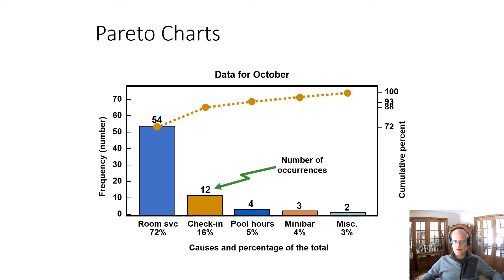The individual histogram bars show how important each issue is, and the line is the cumulative percentage. So 72% was for room service, then 88% included room service and check-in, and then 92 or 93% included pool hours. It gets flatter after that — it's these early ones that you want to spend the most time and attention on.